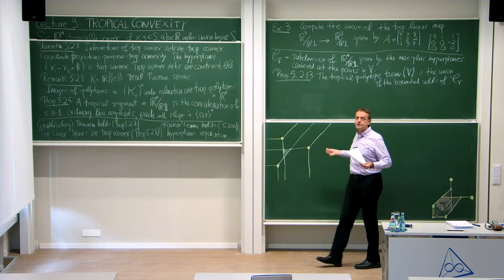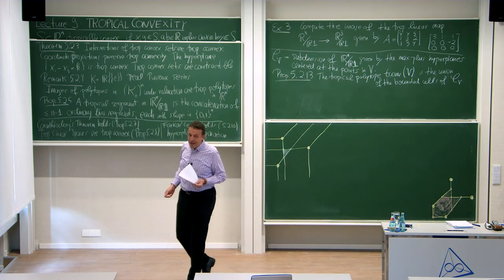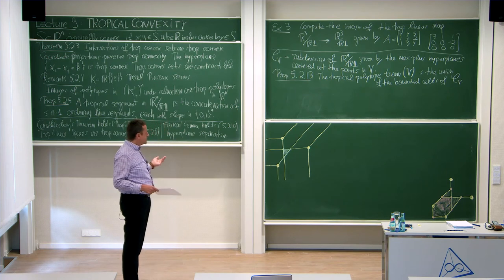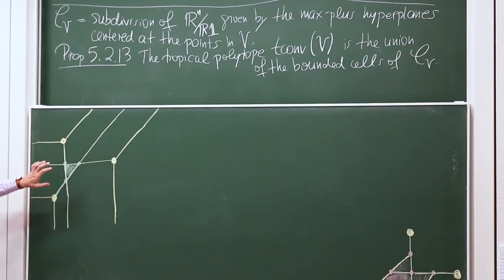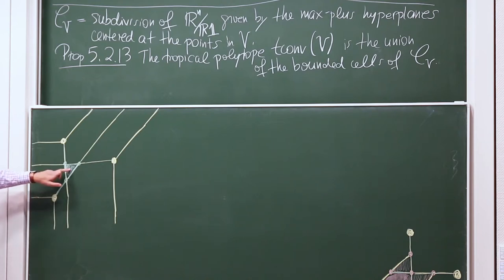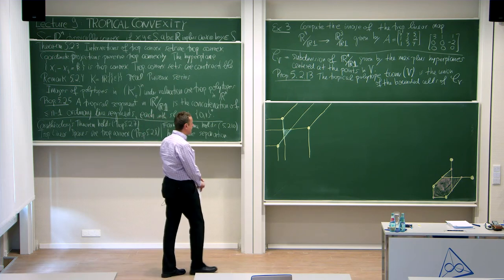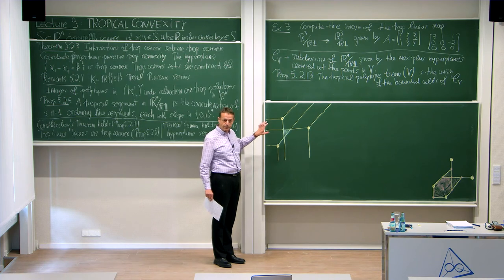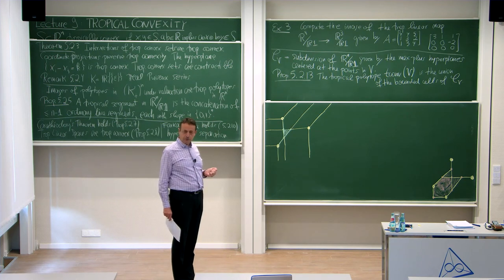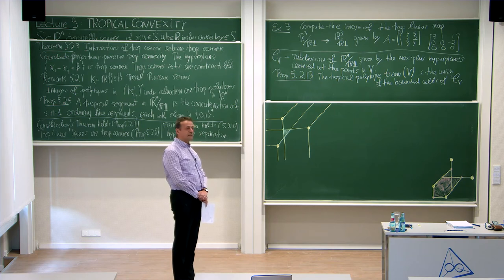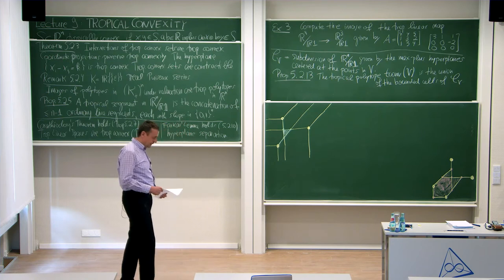Proposition 5.2.13 says the tropical polytope — the tropical convex hull of finite set V — is the union of all bounded cells of the subdivision C_V. So C_V is the hyperplane arrangement defined by V in the max-plus algebra. We draw this arrangement and focus on the bounded cells. In this example picture, there are 13 bounded cells: six zero-dimensional cells, six one-dimensional cells, and one two-dimensional cell — F-vector 6, 6, 1. The zero cells come in two flavors: the yellow tropical vertices and three auxiliary green nodes from the construction.